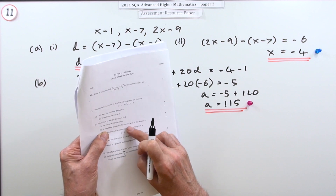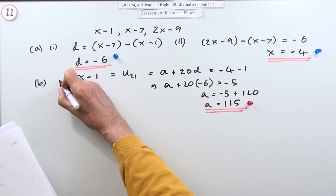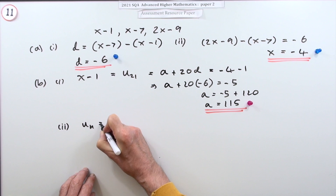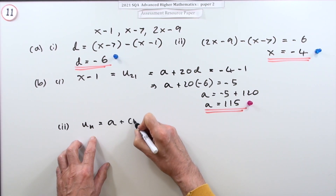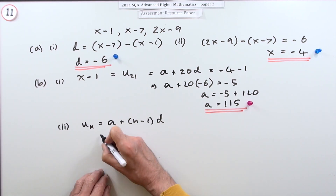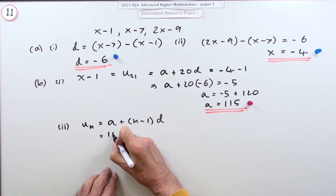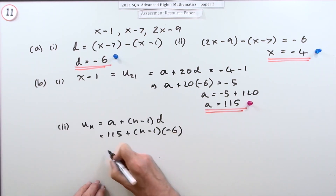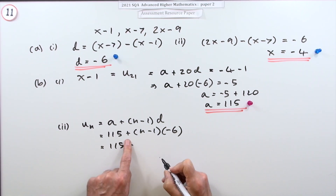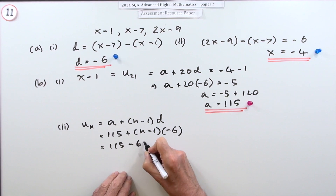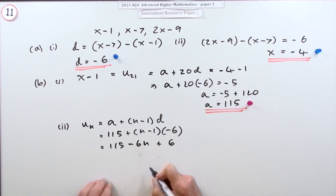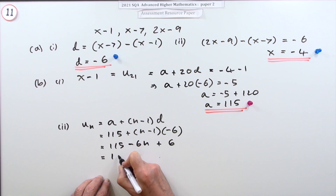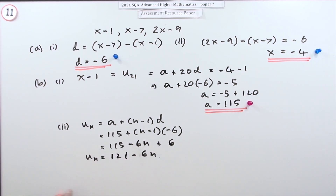Part b, part 2: find a simplified expression for the nth term. The nth term uₙ is the first term plus (n minus 1) lots of the common difference. The first term is 115 and the common difference is negative 6, so uₙ equals 115 plus (n minus 1)(negative 6). Simplifying: 115 minus 6n plus 6, giving uₙ equals 121 minus 6n. That was one mark.